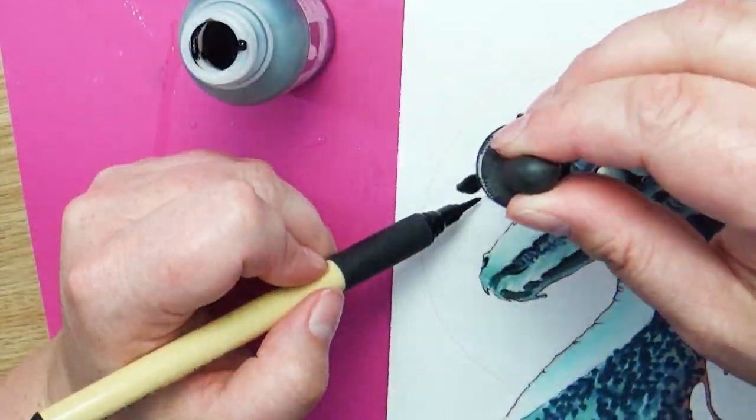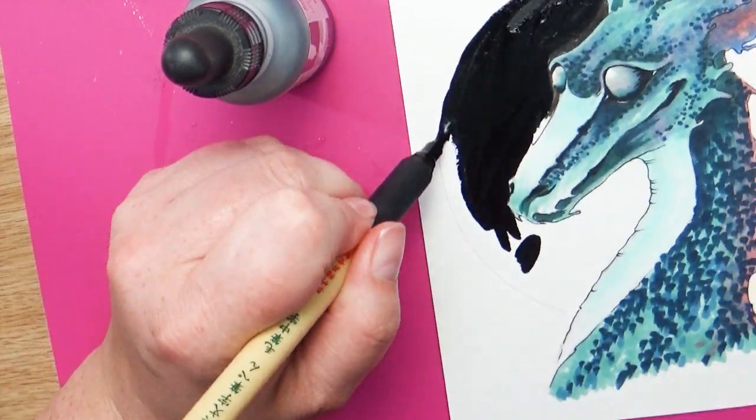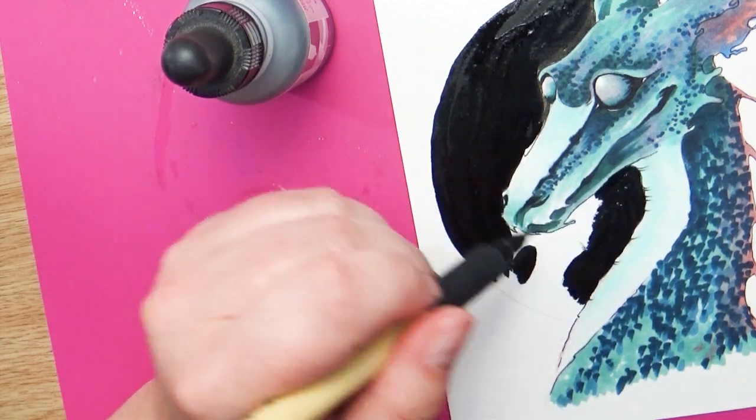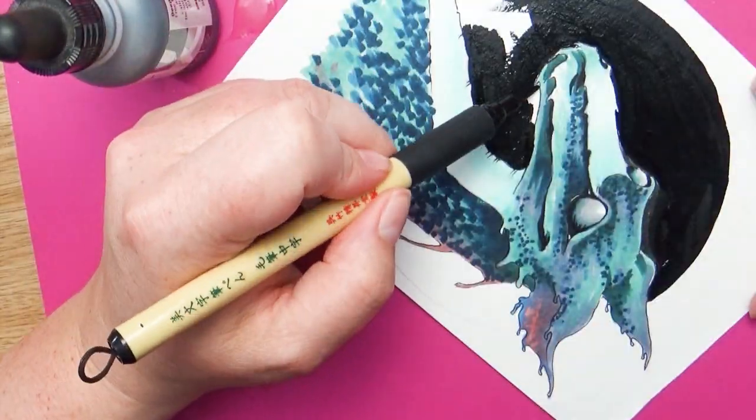For this one I chose kind of a grayish green blue with a hint of pink highlights coming in from the ears and the little back spines and all that. So have fun creating and designing your own dragons.